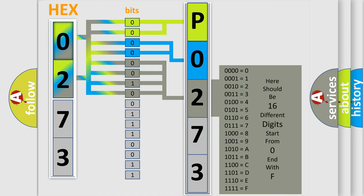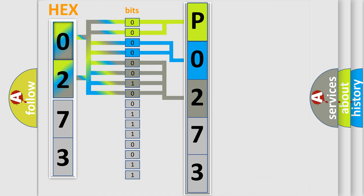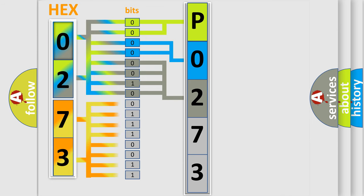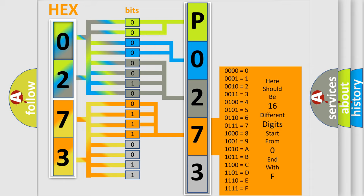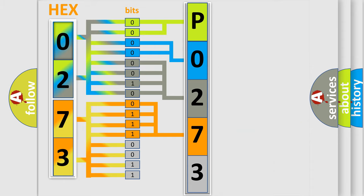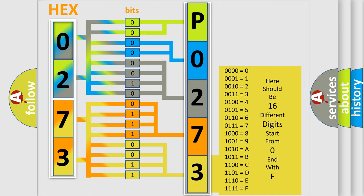The second byte is composed of a combination of eight bits. The first four bits determine the fourth character of the code, and the combination of the last four bits defines the fifth character. A single byte conceals 256 possible combinations.